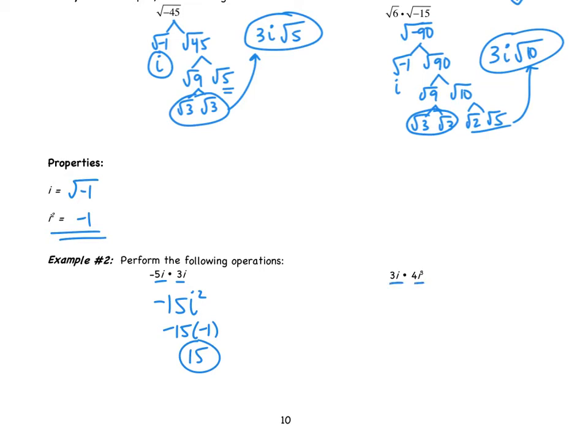We try this next example. We get 12 i to the 4th. Well, we don't know what i to the 4th is, but I do know that i to the 4th is i squared times i squared. i squared is negative 1. So I get 12 times negative 1, which is negative 12, times negative 1 is positive 12.